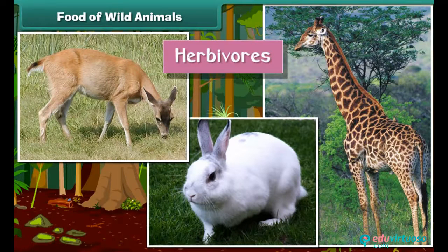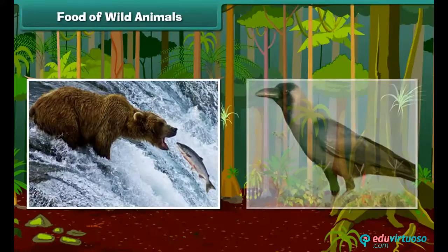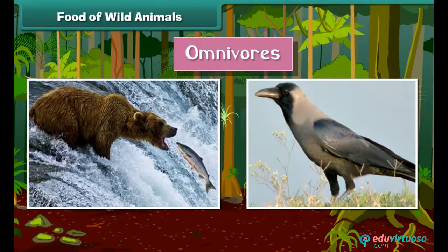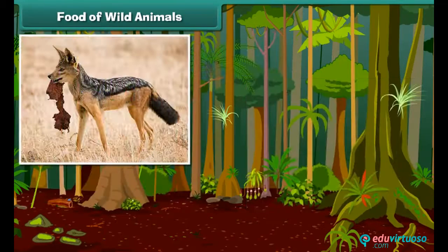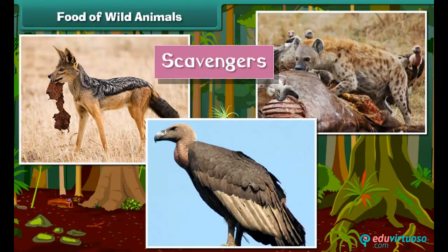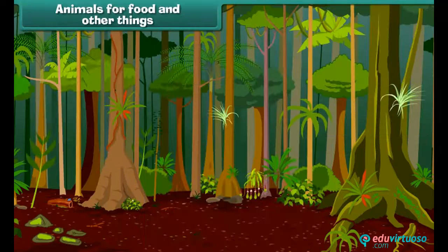Animals like bear and crow are called omnivorous animals as they eat both plants and animals. Jackals, vultures, and hyenas are called scavengers — they eat the flesh of dead animals. Animals are useful to us; we get fur and leather from animals like lion, snake, and crocodile.